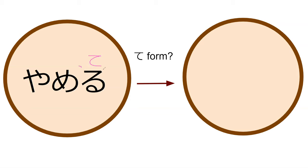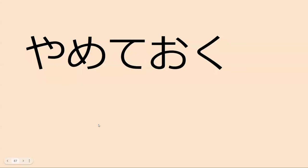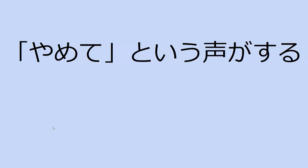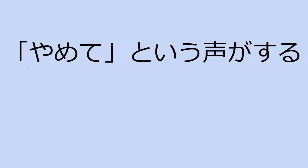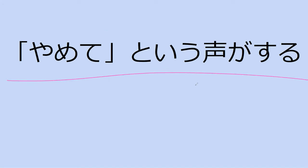Yamete — without a small tsu, so just yamete. U-verbs are the ones with the cloud — stop. Yamete! So if you see te-form all on its own, this is an order, and it's a generic order. It doesn't insinuate anything; it's not polite, it's not impolite. It's literally just like saying the word 'stop' in English.